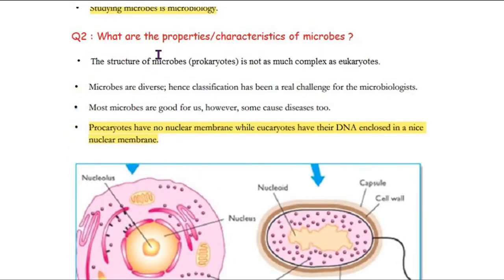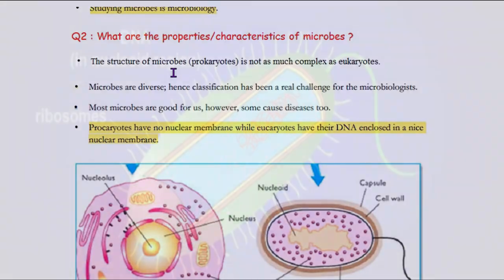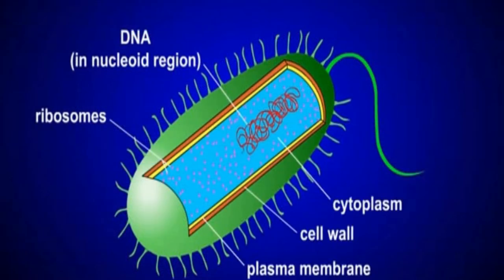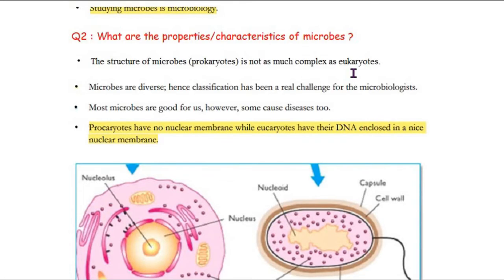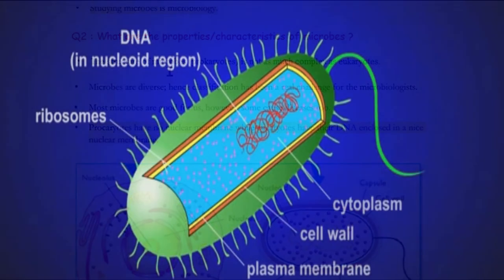The second question is: what are the properties and characteristics of microbes? Microbes are prokaryotes, and they are not as complex as eukaryotes, because eukaryotes are multicellular, which means they have many more cells. This is why the eukaryotic structure is very complex, but the microorganism structure is not so complex.